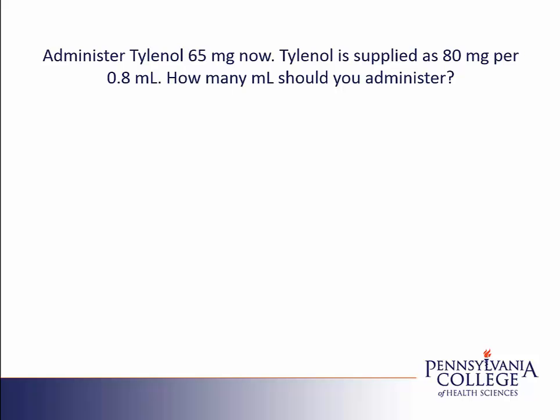Because it's a dosing problem, we want to identify what is ordered and what is available to us. The 65 milligrams is ordered, and the 80 milligrams per 0.8 milliliters is what is available.